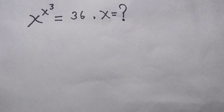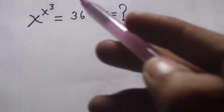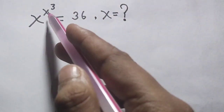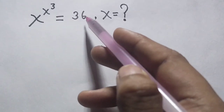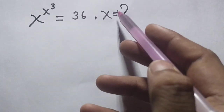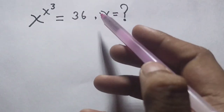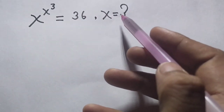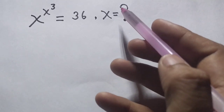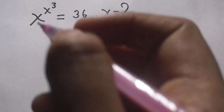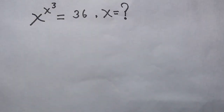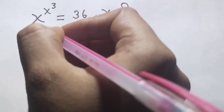Hello students, today I have this question: x power x power 3 equal 36, and we need to find the value of x. To start, both sides multiply by 3 on the power.